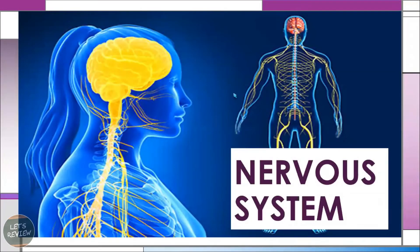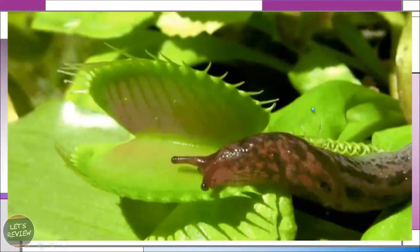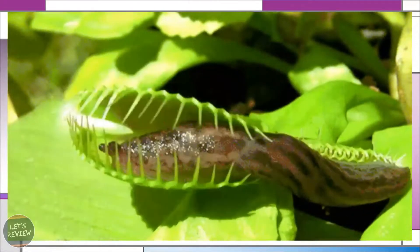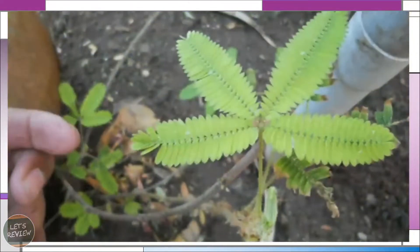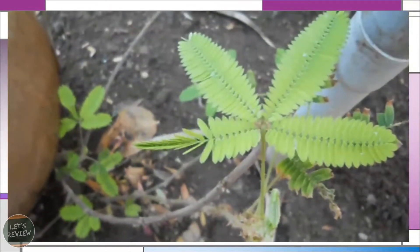Let's talk about the nervous system. This time we want to know about the different parts of the nervous system as well as how it works. When it comes to how living things respond, there are different ways to respond according to the stimulus present in their surroundings — like humans, even plants respond to different stimuli.